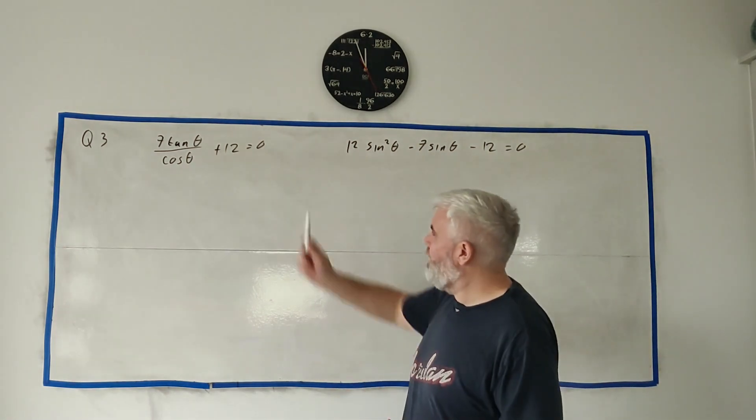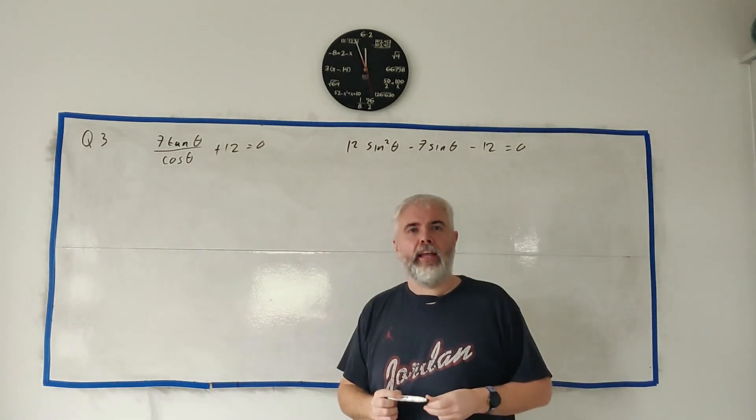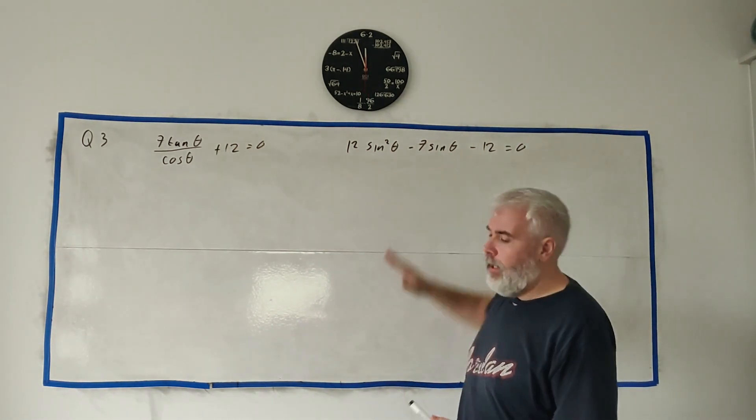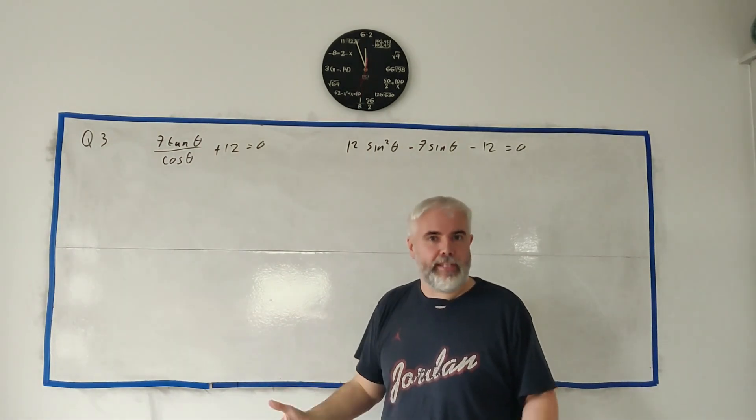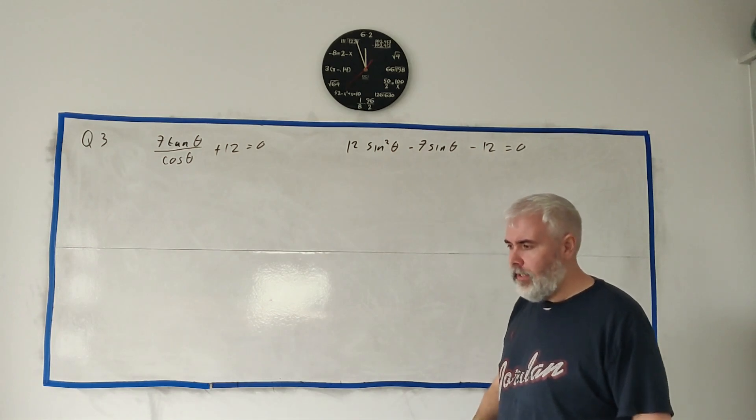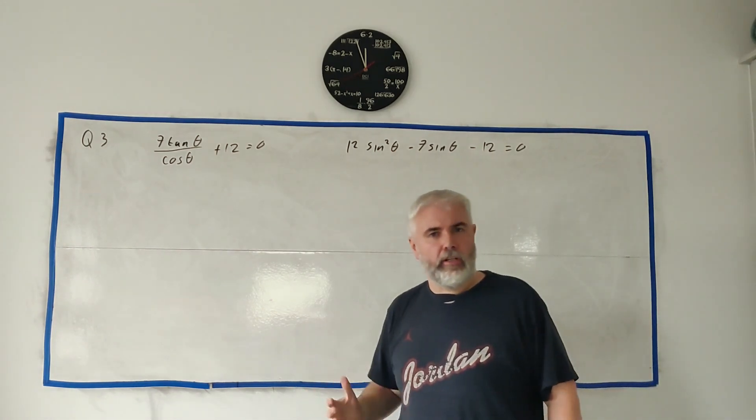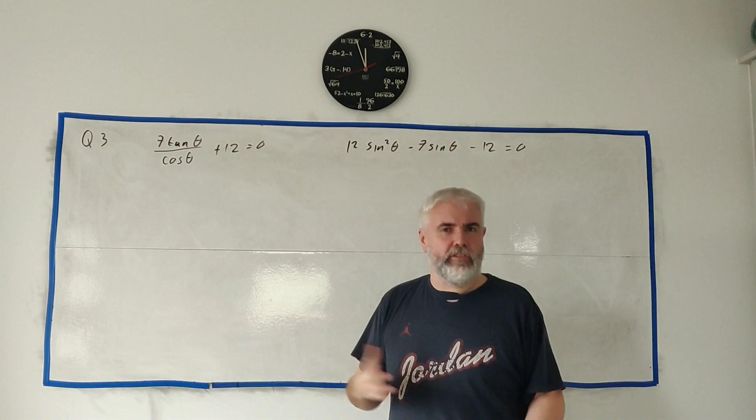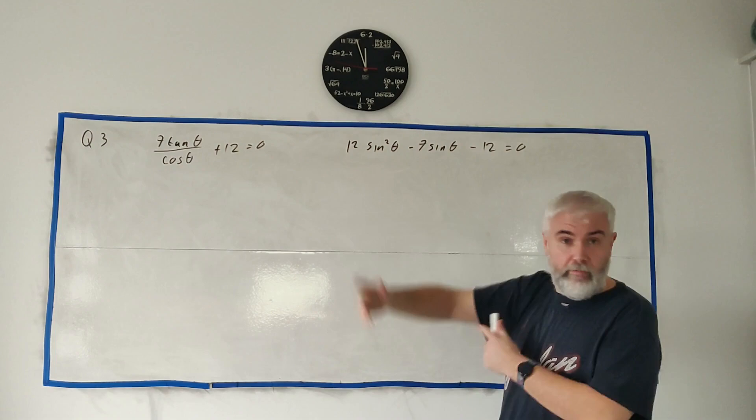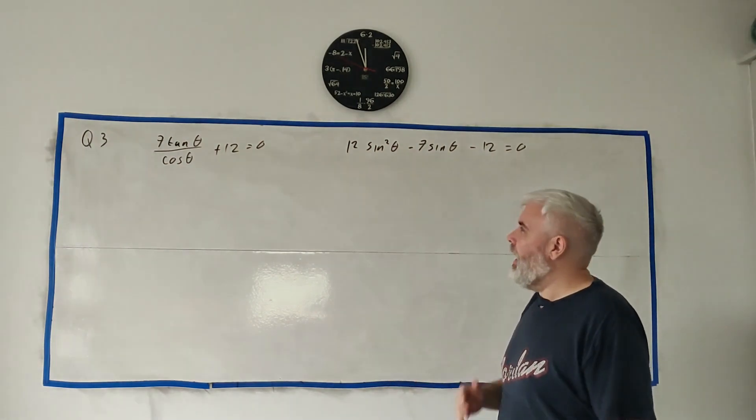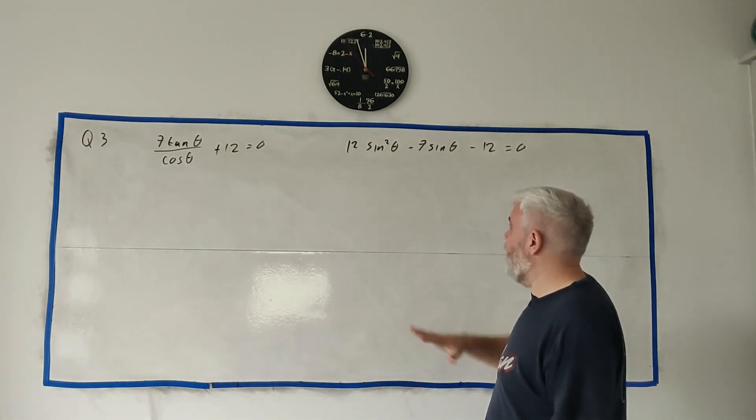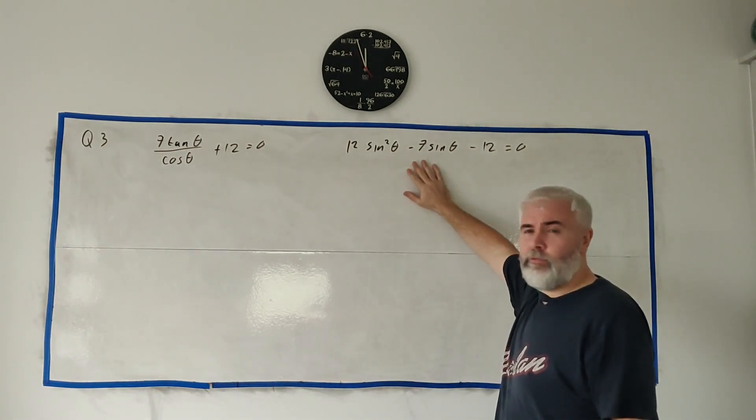In question 3 they give us two equations as you can see here and they ask us to show that this can be expressed like this. Basically show that they look the same, they are the same. You're often given questions like this. I always say make one look like the other.